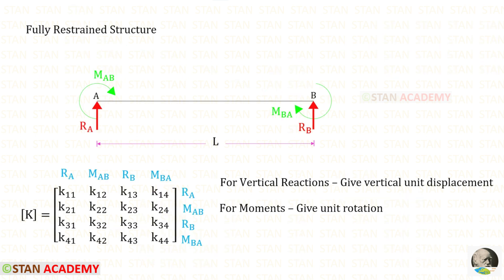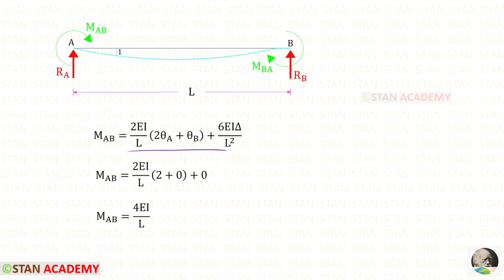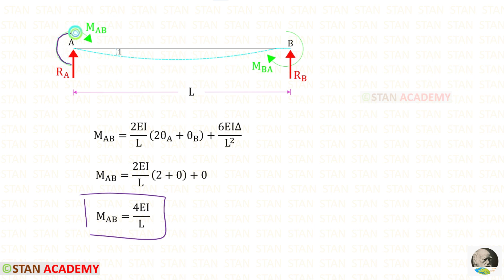Now we are going to find the elements in the second row and second column, which belongs to MAB. We know that for moments we need to give unit rotation. The moment MAB is located at point A, so we have to apply unit rotation at A. Because of the unit rotation the beam will deflect accordingly. At point B we have fixed support, so there will be no slope. Using the slope deflection equation: there is no settlement at either point, so delta will be 0 and this term becomes 0. At point A we have unity slope, so theta_A = 1, and at point B there is no slope so theta_B = 0. For MAB we will get 4EI upon L — this is positive, meaning MAB will be acting in the clockwise direction.